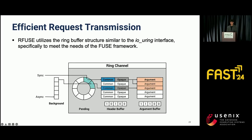RFuse utilizes a ring buffer structure for scalable communication, similar to the io_uring interface. However, we could not directly use io_uring because it performs request submission in the user-to-kernel direction, which does not align with the FUSE structure where kernel-to-user submission is necessary. Also, since io_uring has its own kernel context, we found it difficult to add flexible optimizations within the FUSE structure. Instead, we designed our own ring channel specifically to meet the needs of the FUSE framework.